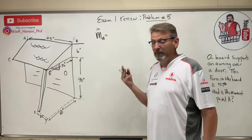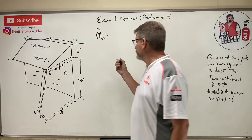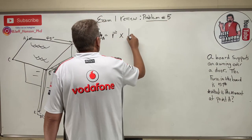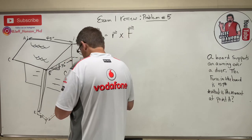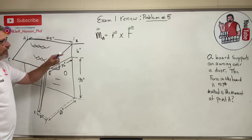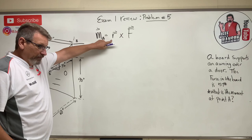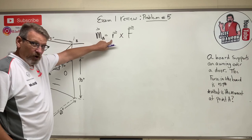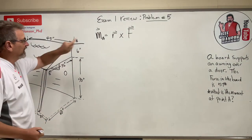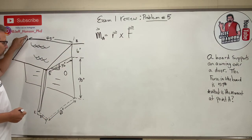For 3D problems, you need to use r cross f — r cross f. One of the things to remember is what r is: r is a position vector that goes from the point you're taking a moment about to the line of action of the force. Since we're taking the moment at A, r starts at A and goes to the line of action of the force.